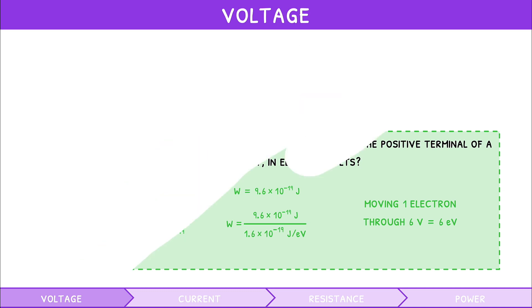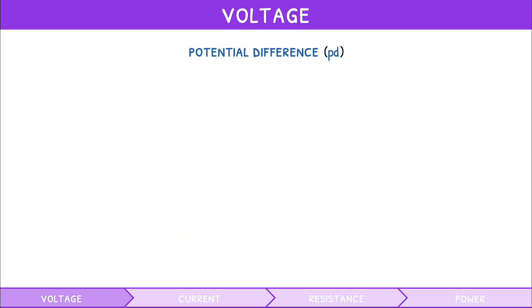You may also hear voltage referred to as potential difference, PD, and you can use both terms interchangeably. But what does potential difference mean?